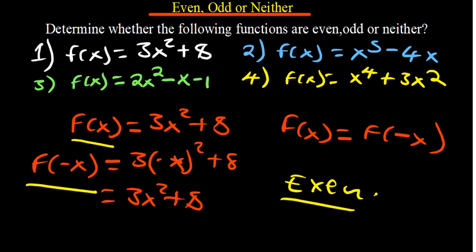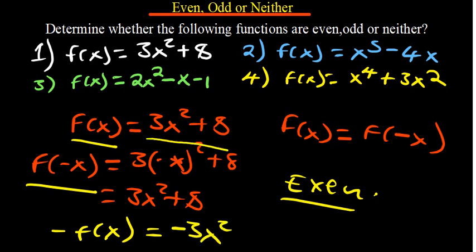To confirm it's not odd, we check -f(x) = -(3x² + 8) = -3x² - 8. This is not equal to f(-x) = 3x² + 8, so the function is not odd. Therefore, f(x) = 3x² + 8 is an even function.